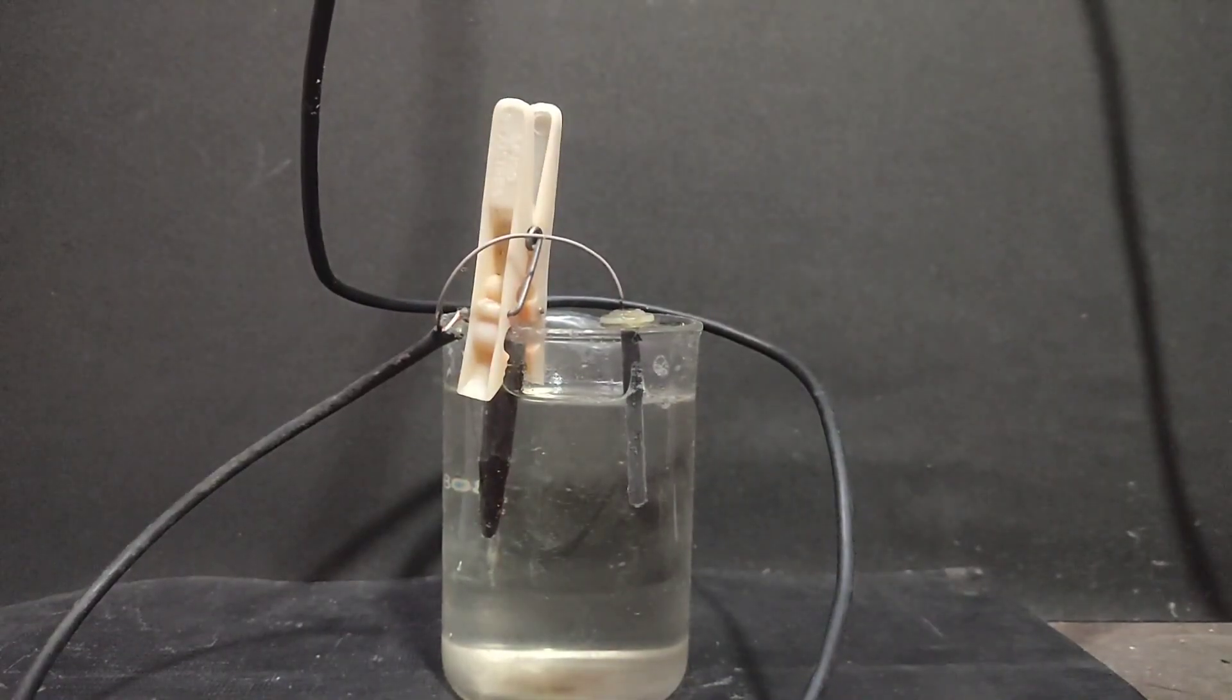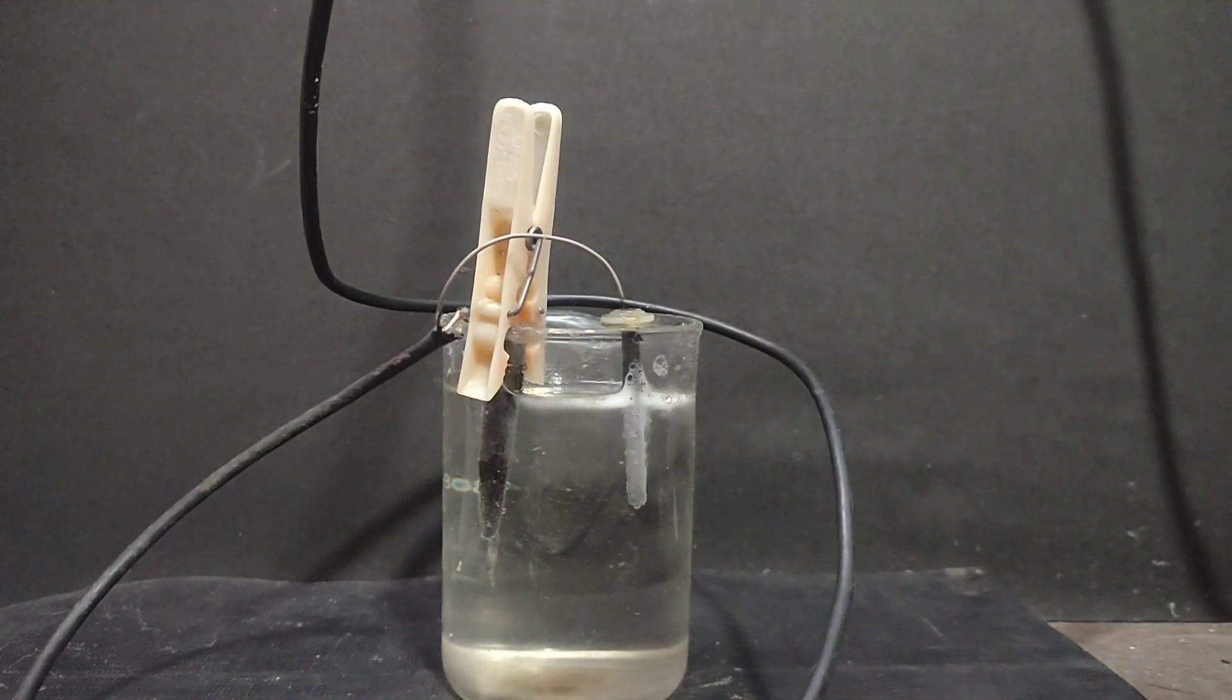Now I placed two graphite electrodes in the saturated solution and connected them with an 18 watt mobile charger. The thick electrode is the anode and the thin one is the cathode.